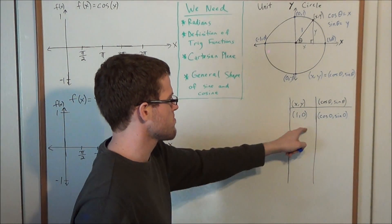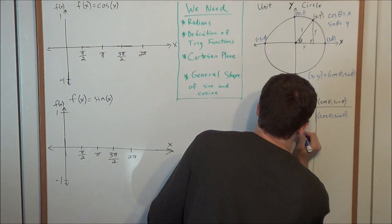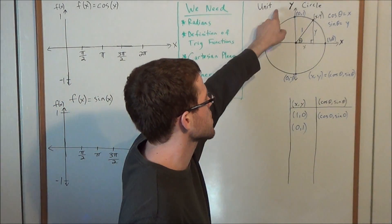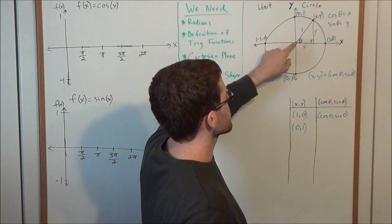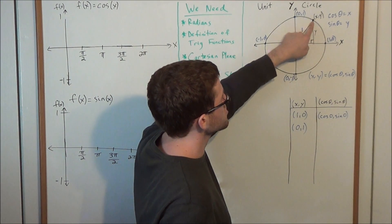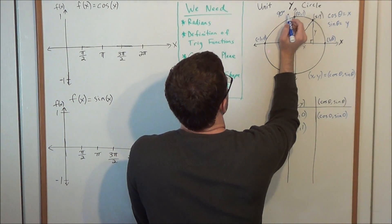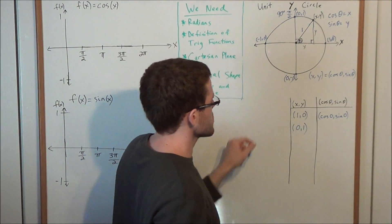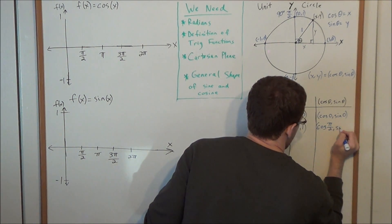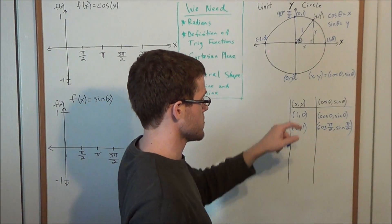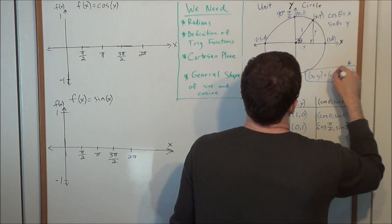Now we'll construct a table of points using this relationship. From the point 1, 0 to 0, 1, we spin exactly 90 degrees, which is also pi over 2 radians. So to get to the point 0, 1, we extend out a radius of 1 and spin pi over 2 radians, giving us cosine pi over 2, sine pi over 2. Using the conversion that x, y goes to cosine theta, sine theta on the unit circle.